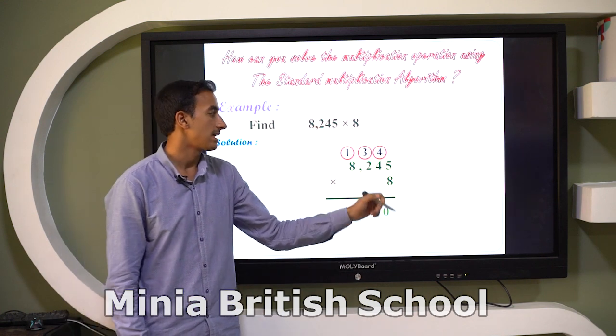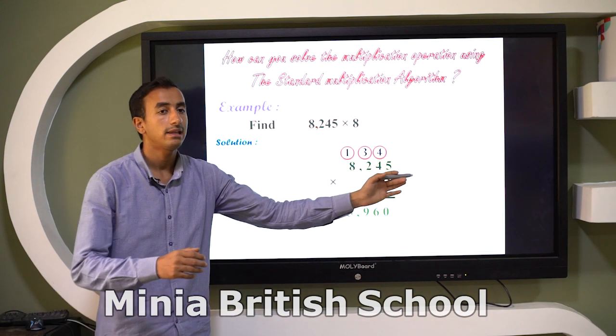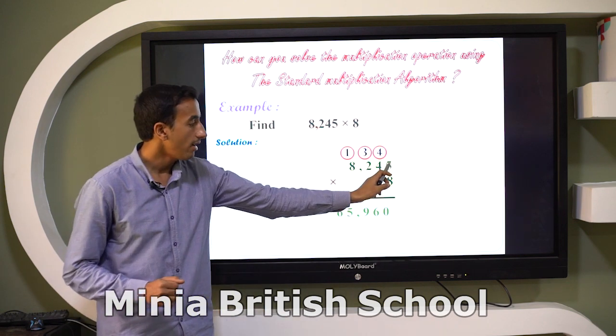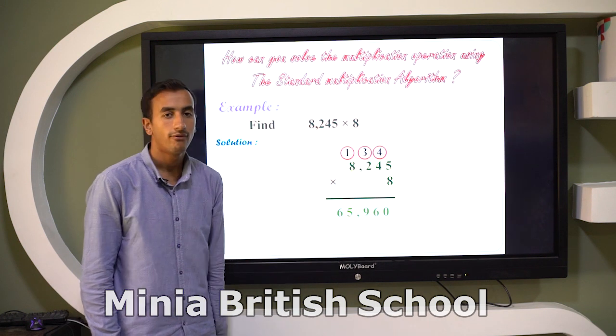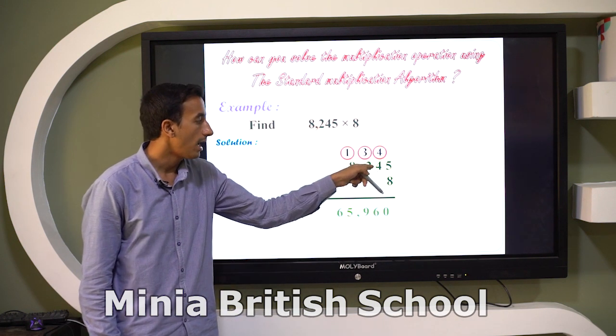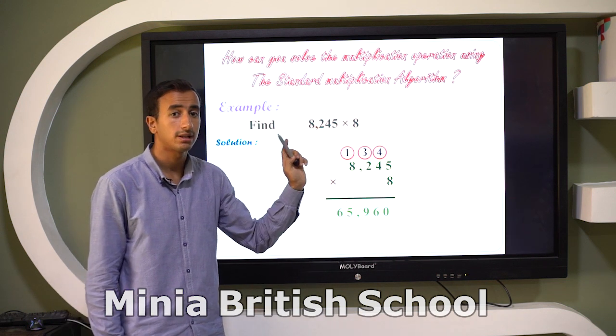We can start from ones, from right to the left. Five times 8, yes, it's equal to 40. Write zero and carry up 4, so write 4 above the tens place. We can use the multiplication first: four times 8, it's equal to 32.